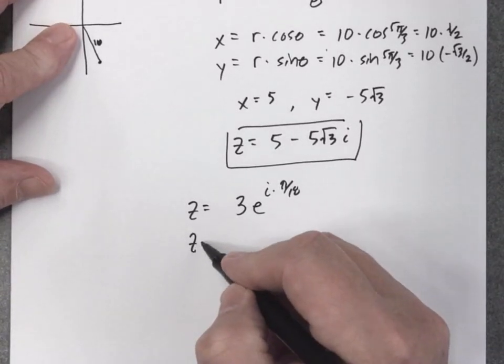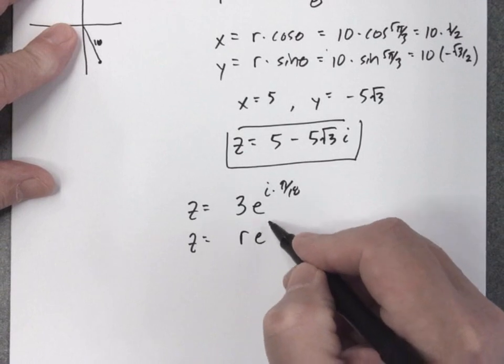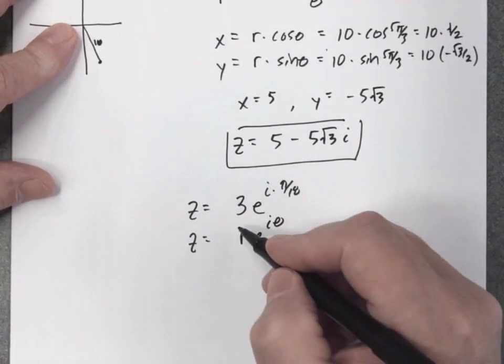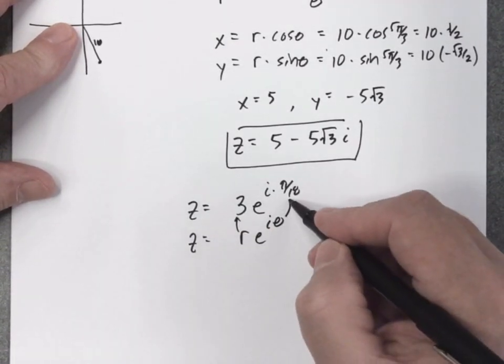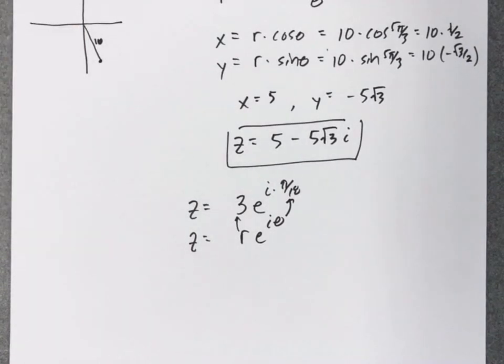Now the exponential form is this. So you can see R is 3, you can see the angle is pi over 18, definitely not a special angle. So that's why on this one we're going to use our calculator and they want us to round to three decimal places.